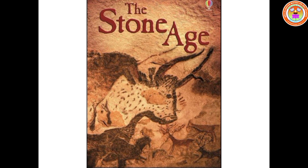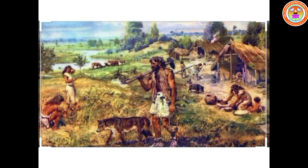Let us see what is Stone Age. The Stone Age is the prehistoric period where weapons and tools were made of stones, bones, wood, or horns of animals. Now, let us discuss about the nature of human evolution.